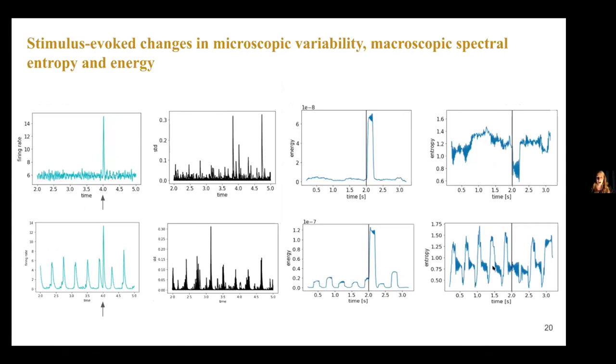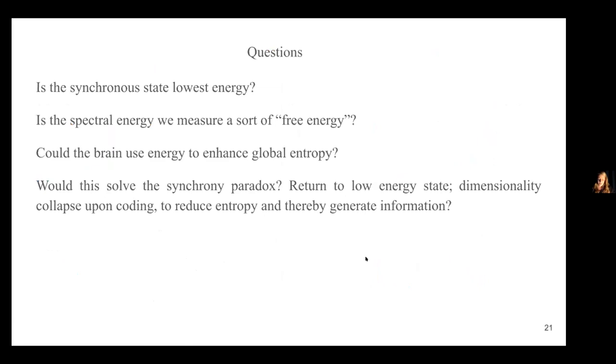So we've started to quantify these collapses in entropy in the TVB ADEX model upon perturbation and a nice bonus of this collapse in the entropy is that you have an increase in the energy locally. And so we start to wonder if that could be related to what has been seen as like ignition of particular networks.